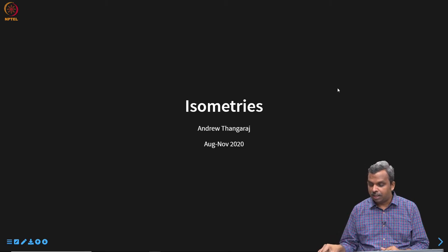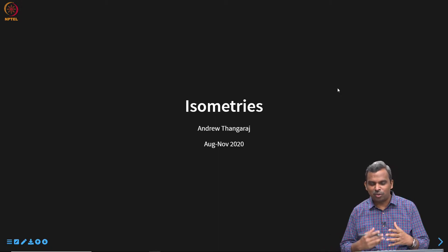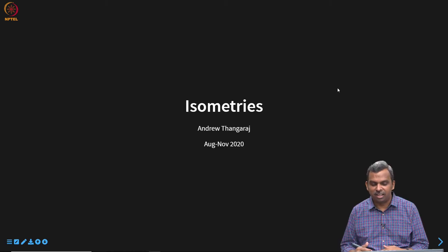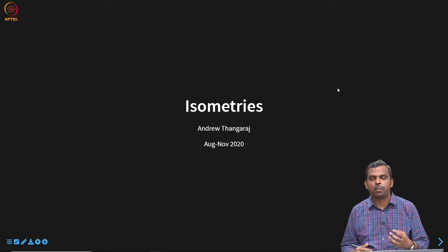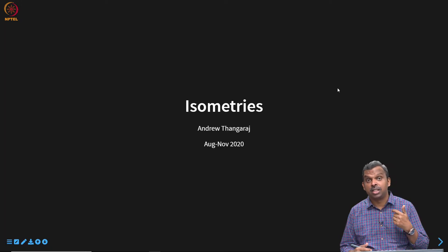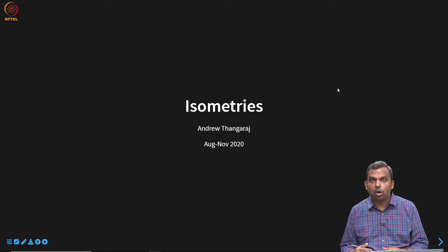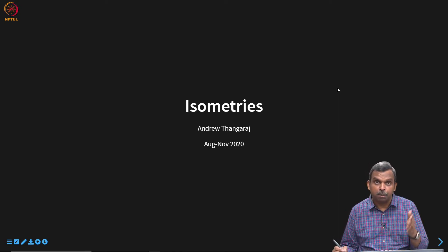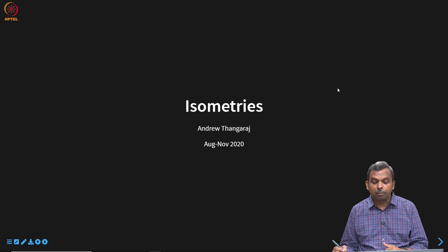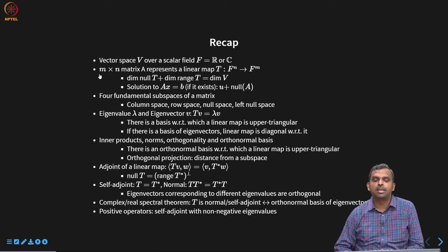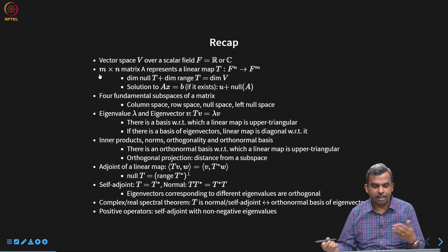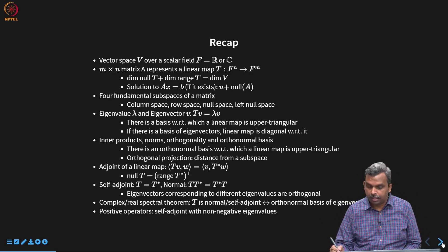Now we are looking at another type of operators called isometries. Isometries are very special and also simple — all these results are simple in some ways, but they add up in very interesting non-trivial ways. For instance, the projection operator has a basic definition but turns out to be self-adjoint and positive. Let us go ahead and study isometries to complete the picture as far as types of operators are concerned.